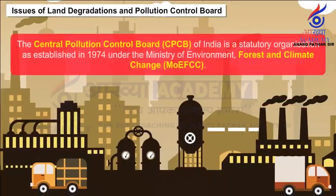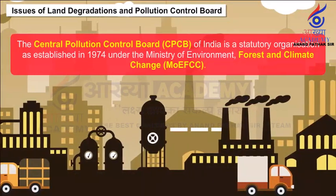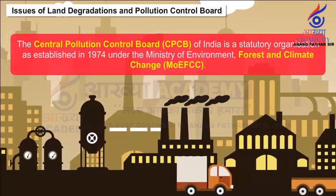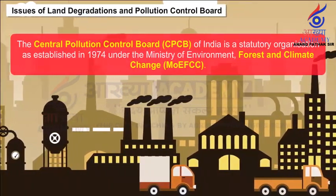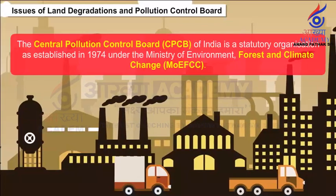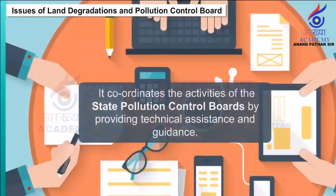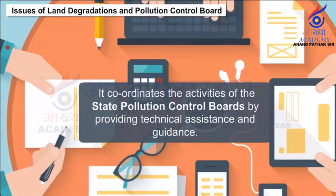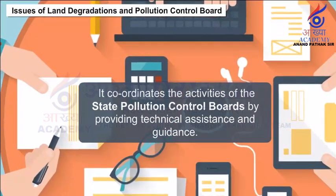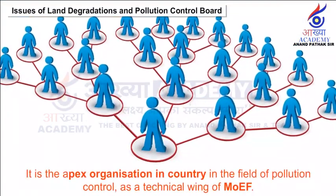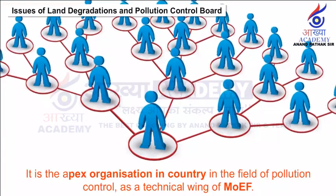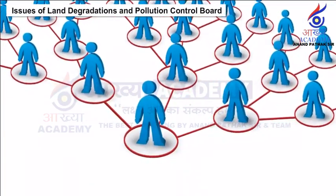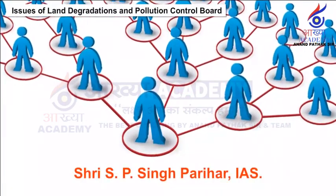The Central Pollution Control Board (CPCB) of India is a statutory organization established in 1974 under the Ministry of Environment, Forest and Climate Change (MoEFCC). It coordinates the activities of State Pollution Control Boards by providing technical assistance and guidance. It is the apex organization in the country in the field of pollution control. As a technical wing of MoEF, the current acting chairman of the board is Sri S.P. Singh Parihar, IAS.